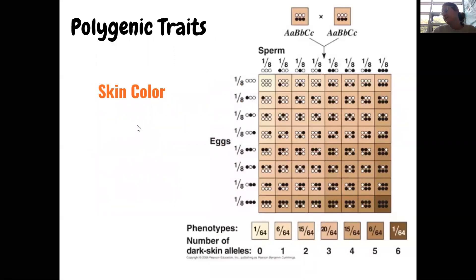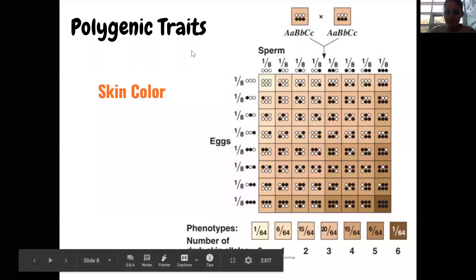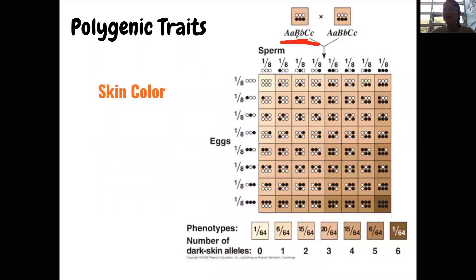Skin color is another polygenic trait. According to this image, three genes code for skin color, and this chart shows a number of shades we can range from. Obviously there are more than shown here — as anybody who's tried to find foundation that matches their skin tone knows, there are so many shades.